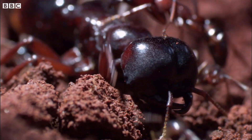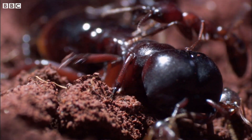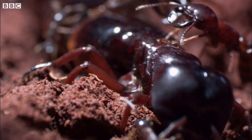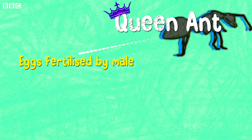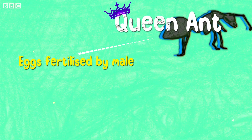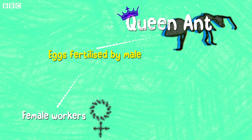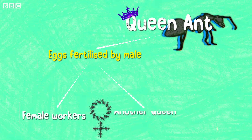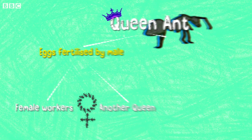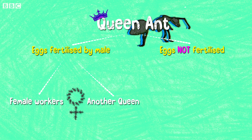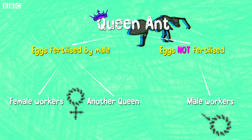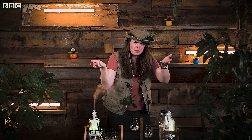Ants have a queen which lays the eggs. If those eggs get fertilized by a male then they hatch into female workers or a new queen, but if the eggs don't get fertilized then they hatch into male workers. Isn't that weird?